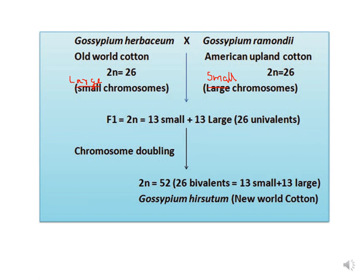Note that the diagram taken from the internet has mistakes: Gossypium herbaceum has large chromosomes, not small, and Gossypium raimondii has small chromosomes, not large. Please refer to good textbooks such as Griffiths to avoid making errors in chromosome size and species names for this topic.